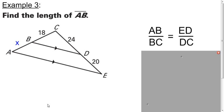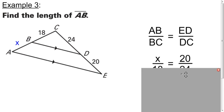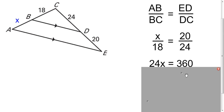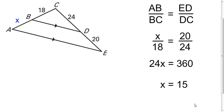And now we can use it to find the length. We have parallel segments here, so we know that we can use this proportion to solve the problem. So we substitute. Apply the cross product. Divide by 24, and you get 15.